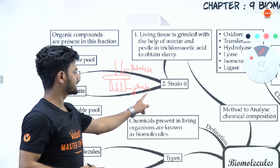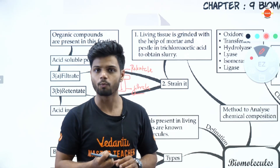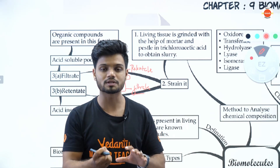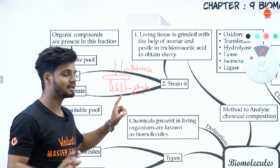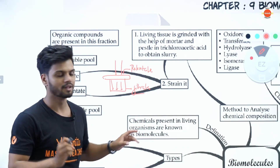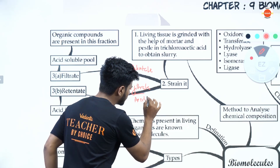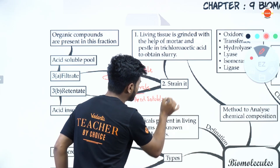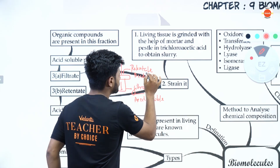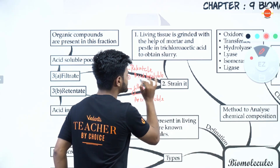The filtrate is also called the acid soluble fraction, because whatever molecules are present in the filtrate are technically soluble in the acid. The retentate above is called acid insoluble, because those molecules are not soluble in trichloroacetic acid.